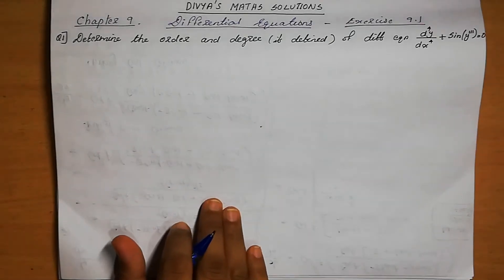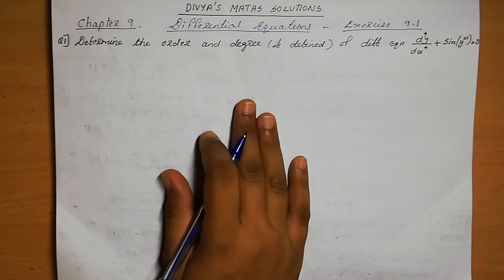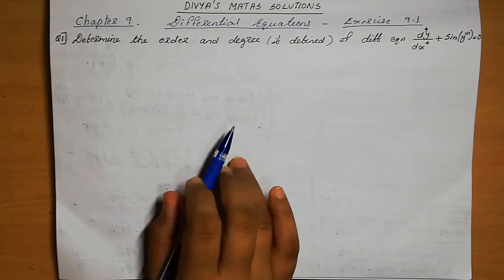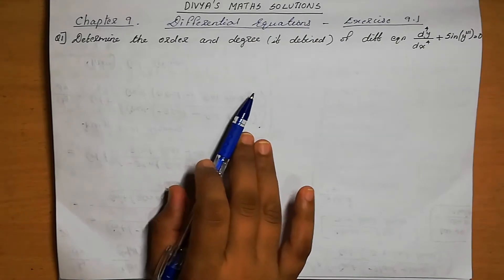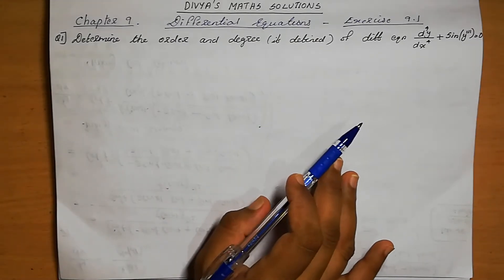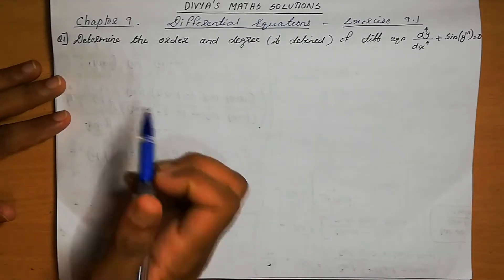Dear students, welcome to Divya Smart Solutions. Today we are going to discuss Chapter 9, Differential Equations, Exercise 9.1. We need to determine the order and degree of each differential equation, one by one.